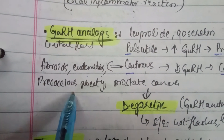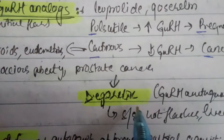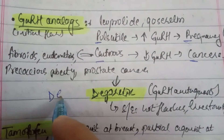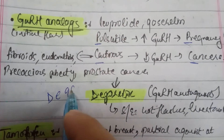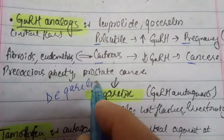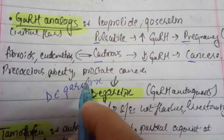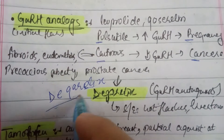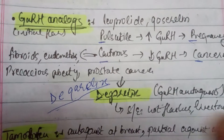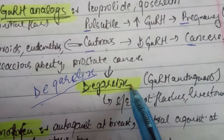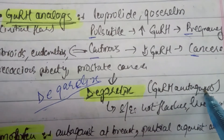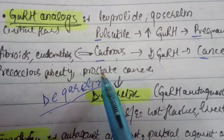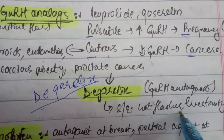Degarelix (D-E-G-A-R-E-L-I-X) is a GnRH antagonist used in prostate cancer. Its side effects include hot flashes and liver toxicity.